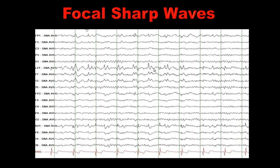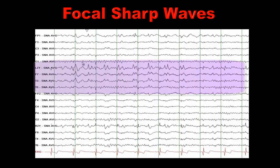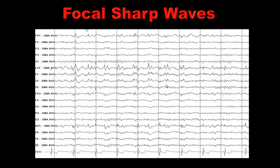Focal sharp waves — here you see the sharp waves in the left zygomatic and left temporal head region, and some sharps in the right temporal as well, though it's not clear if that's ECG artifact. These are sharp waves on the left side. The left temporal sharp waves are accompanied by focal slowing in the left temporal head region, which may be suggestive of an underlying structural abnormality there. The focal sharp waves are suggestive of an increased risk of seizure onset from this location. This is an average reference montage, and you can also review it on a bipolar montage.